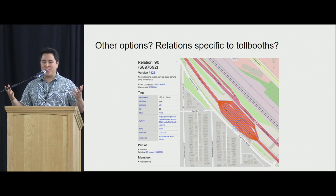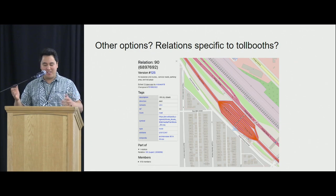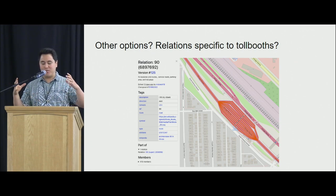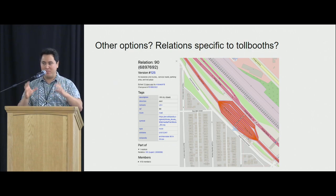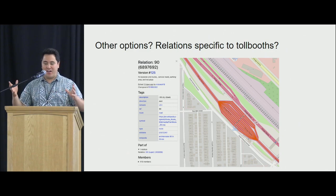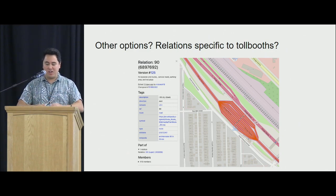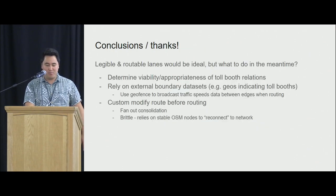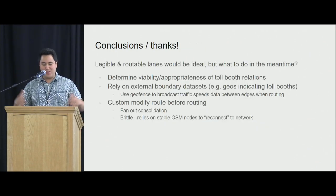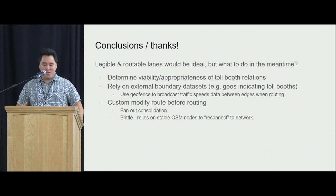So how do you handle this when working with OSM? There are these concepts of relations. What if we had relations just around toll booths, so you could manage the toll booth as a single unit, and fan it out as needed, or consolidate it for routing purposes or traffic modeling purposes? That's basically my conclusion — what if we did that Goldilocks scenario? Thank you.